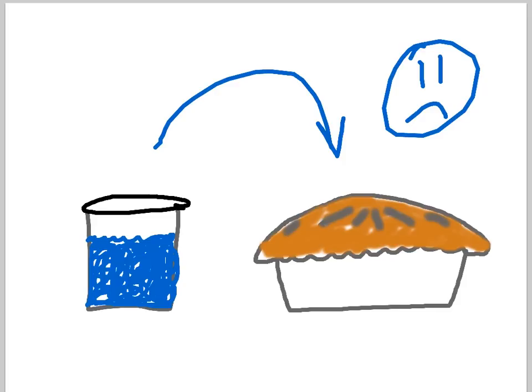When you're solving a math problem, there's got to be a certain way, a certain order, that you do the addition, subtraction, multiplication, and division, so everybody gets the same answer in the end.